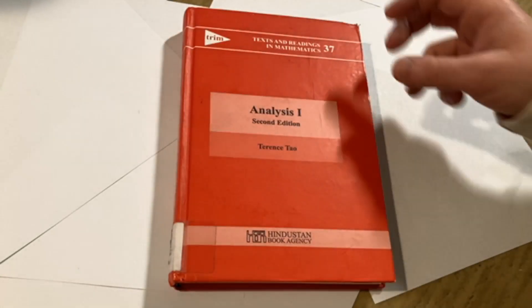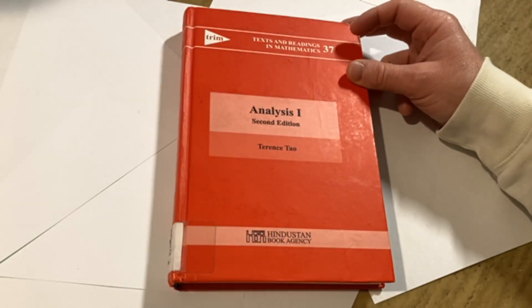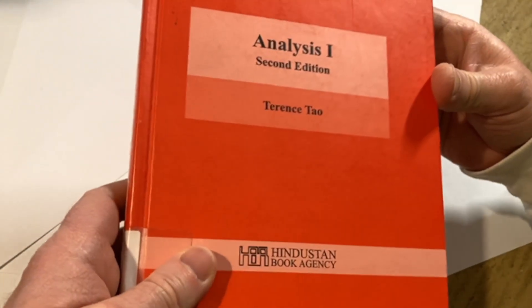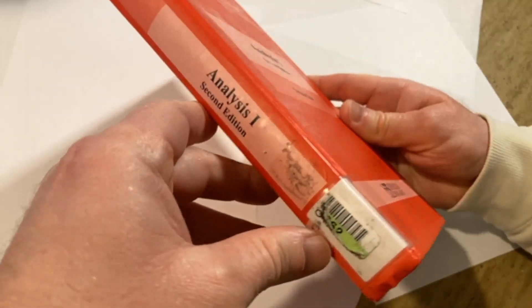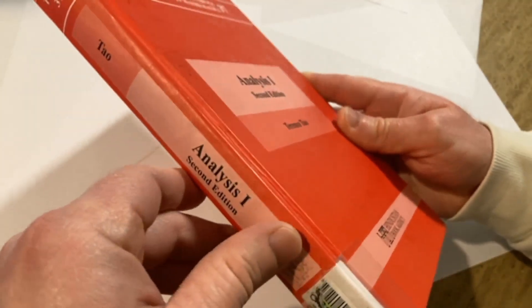Hi, this is Terrence Tao's analysis book. It's called Analysis 1, second edition, published by Hindustan Book Agency. This book is an ex-library book.